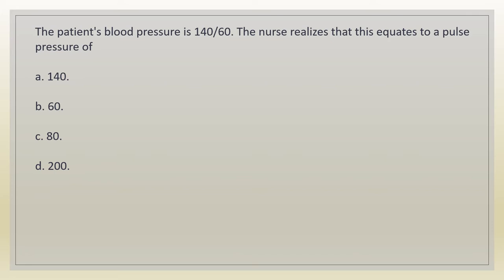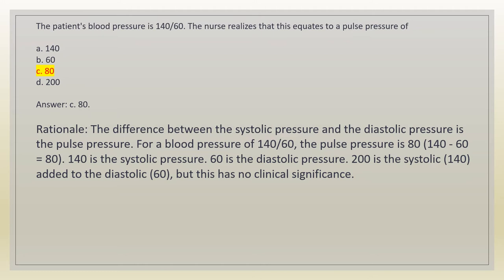The patient's blood pressure is 140/60. The nurse realizes that this equates to a pulse pressure of: A. 140. B. 60. C. 80. D. 200. Answer: C. 80. Rationale: the difference between the systolic pressure and the diastolic pressure is the pulse pressure. For a blood pressure of 140/60, the pulse pressure is 80 (140 minus 60 equals 80). 140 is the systolic pressure, 60 is the diastolic pressure. 200 is the systolic added to the diastolic, but this has no clinical significance.